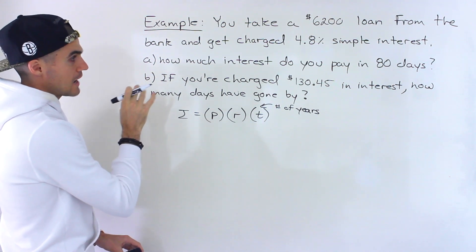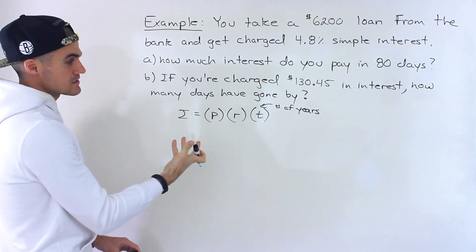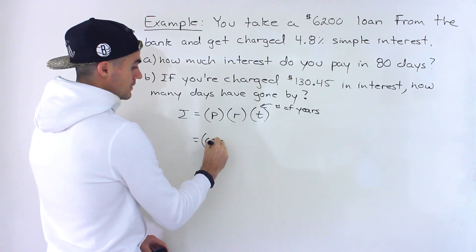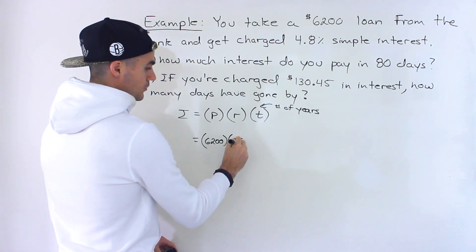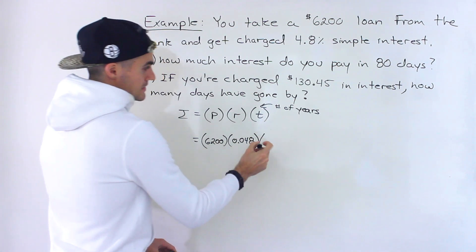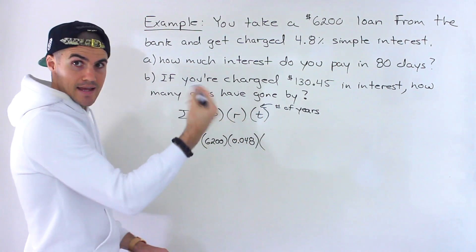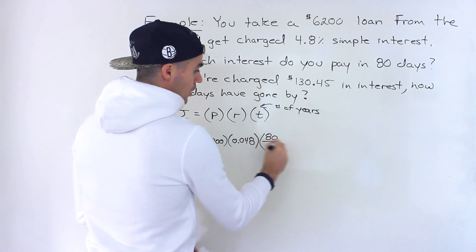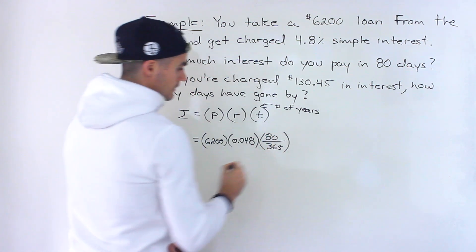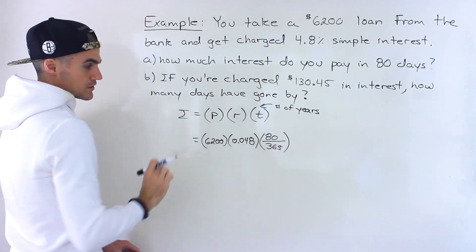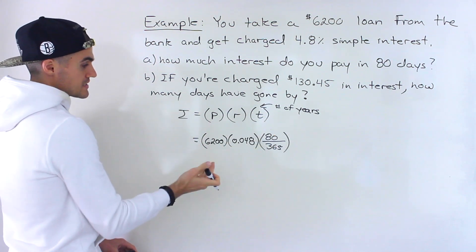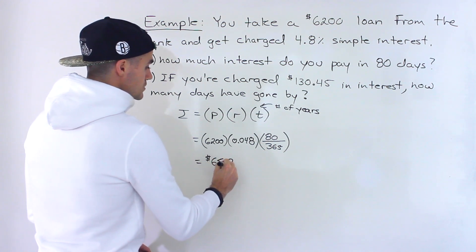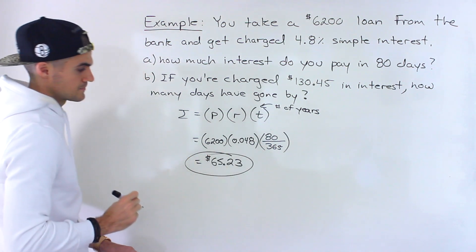Notice in this case we're going to have to prorate this because in Part A we're asked how much interest do you pay in 80 days — so it's not even a full year. What we would do is plug in the principal amount, 6,200, plug in the interest rate as a decimal, 0.048, and then prorate the year. How many days are there in a year? 365. So we would write 80 over 365.